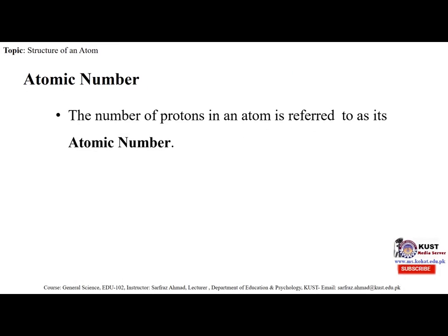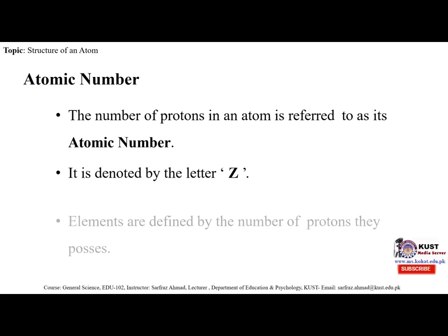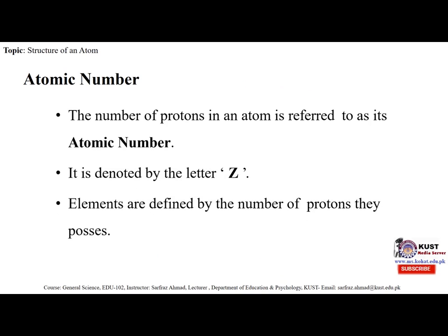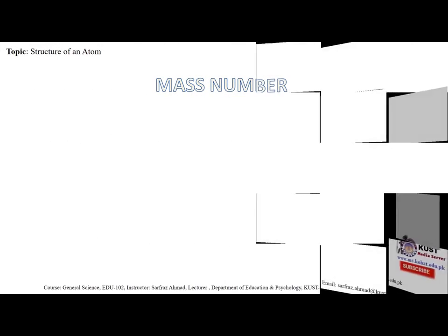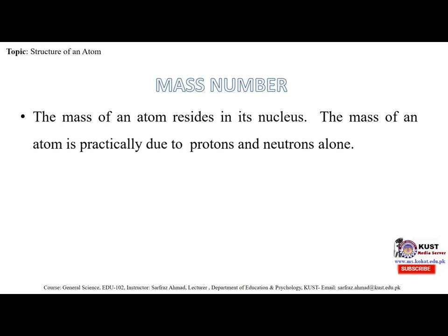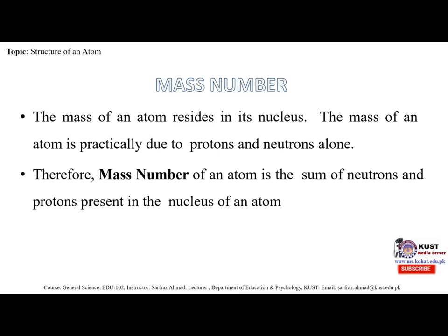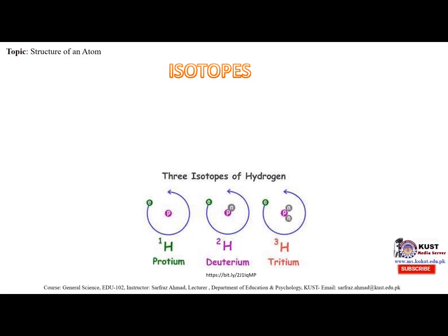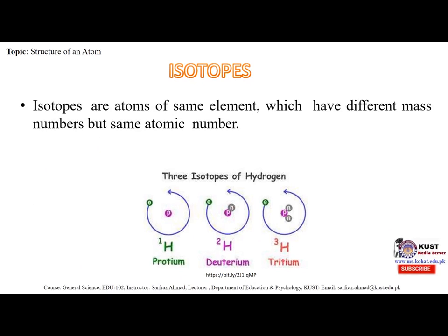Atomic number means the number of protons in an atom, referred to as its atomic number. It is denoted by the letter Z, and elements are defined by the number of protons they possess. The atomic number of hydrogen is 1. The mass of an atom resides in its nucleus and is practically due to protons and neutrons alone. Therefore, the mass number is the sum of neutrons and protons present in the nucleus. For hydrogen, its mass number is 1. Isotopes are atoms of the same element which have different mass numbers but the same atomic number — like protium, deuterium, and tritium, the three isotopes of hydrogen. Their chemical properties are similar but physical properties are different.